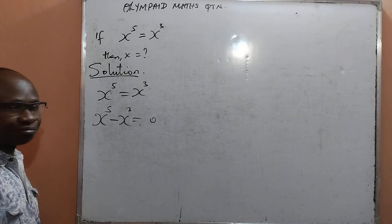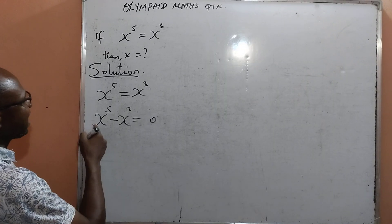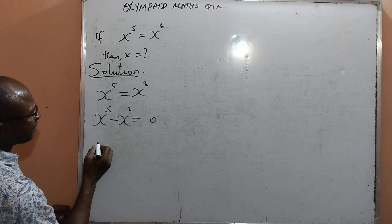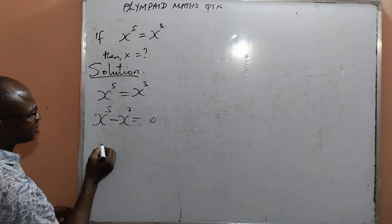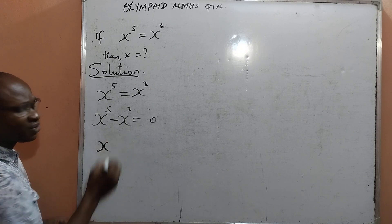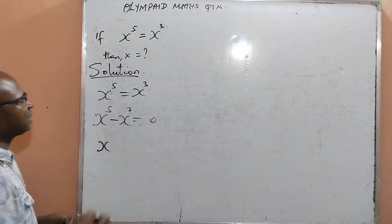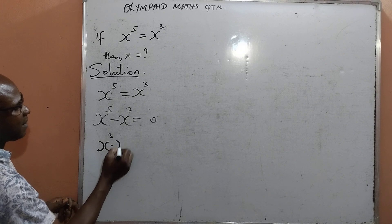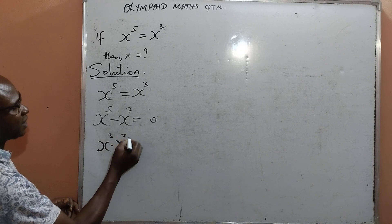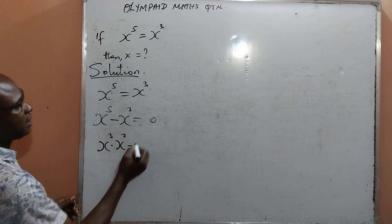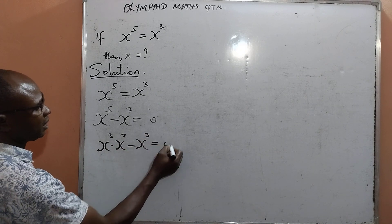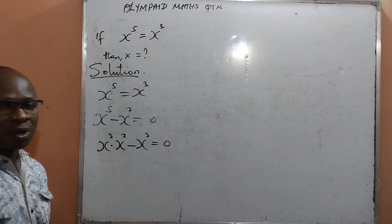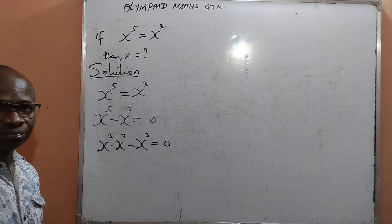Next, x raised to power 5 can be written as x raised to power 3 multiplied by x raised to power 2, then minus x raised to power 3 equal to 0.